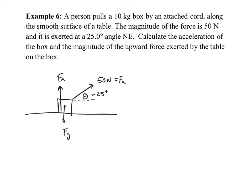When a force is applied at an angle, it pulls to the right and slightly upward. We use components — just like velocity components in projectile motion. We replace FA with its components FAX and FAY. The x-component is FA times cosine of the angle: 50 cosine 25. The y-component is FA times sine of the angle: 50 sine 25.